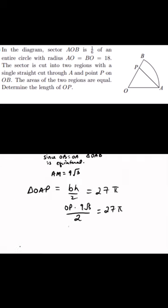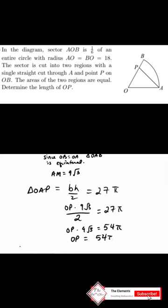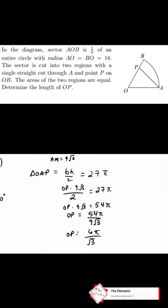Finally, we calculate the area of triangle OAP and set it equal to 27π. This gives us the final solution of 6π over root 3.